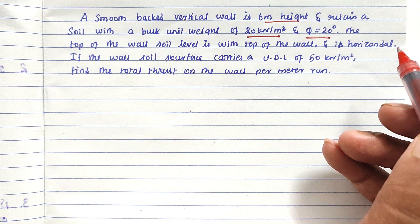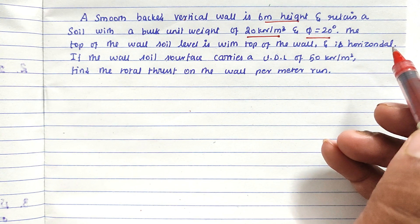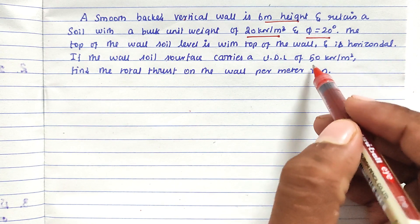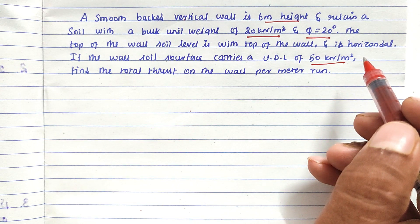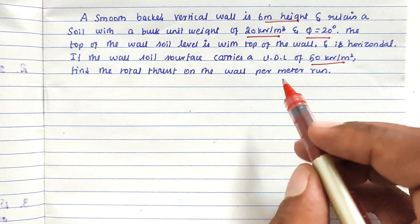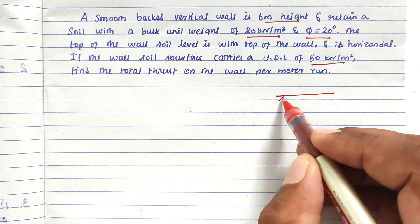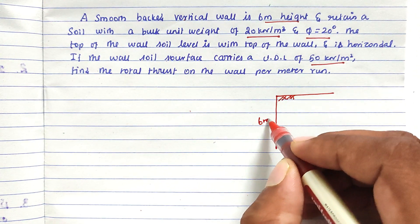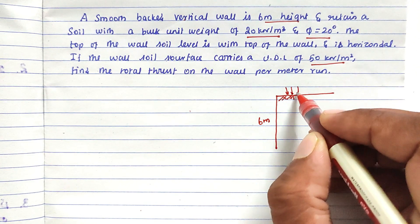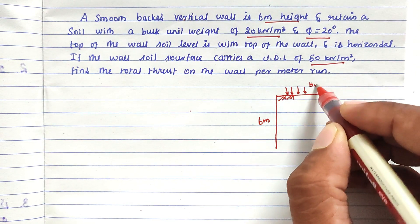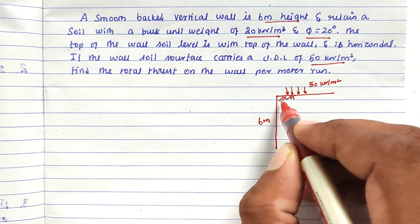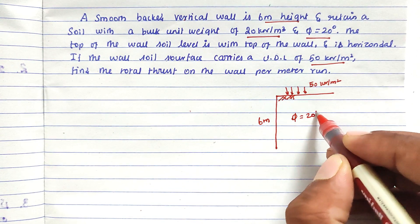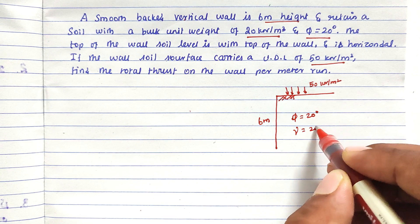The angle of internal friction is 20 degrees. The top of the wall soil level is horizontal with the top of the wall. The soil surface carries a UDL of 50 kilo Newton per meter square. We need to find the total stress on the wall per meter. The retaining wall is 6 meters high with UDL of 50 kilo Newton per meter square applied at the surface, and gamma equals 20 kilo Newton per meter cube.